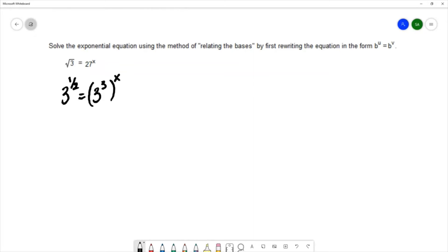I can use the power rule for exponents on the right, raising a power to a power, and we simplify by multiplying those powers together. That would be 3 to the 3x. Now I've written this in the format that was mentioned over here, having the same base on both sides.